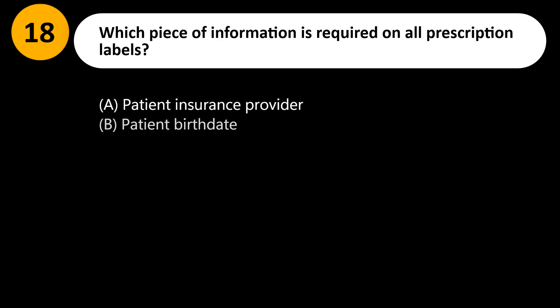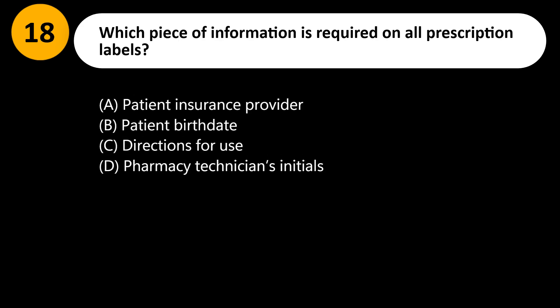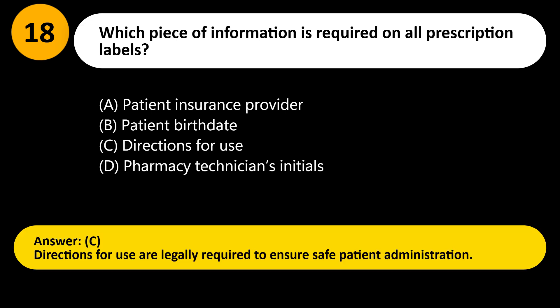Which piece of information is required on all prescription labels? A) Patient insurance provider, B) Patient birth date, C) Directions for use, D) Pharmacy technician's initials. Answer: C. Directions for use are legally required to ensure safe patient administration.